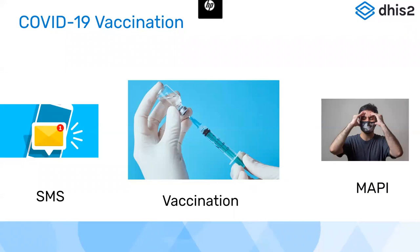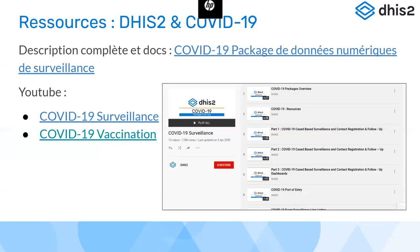Peut-être envoyer l'identifiant unique à la personne. Nous allons pouvoir voir comment cela a été géré. Les autres informations liées à la vaccination seront bien sûr collectées. Et plus tard, si nous avons des MAPI, il y a aussi ce tracker qui sera utilisé pour pouvoir collecter ce genre d'informations.